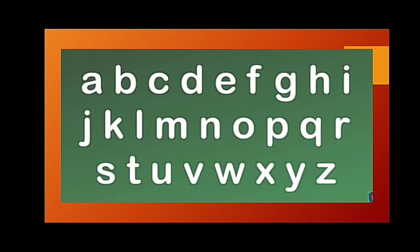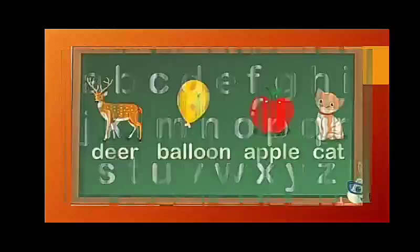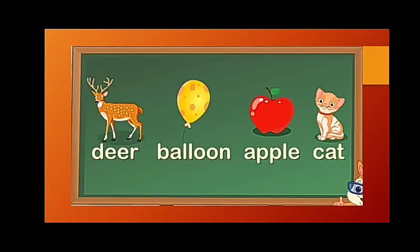This is the alphabetical order of English letters. Let us see a few examples of how the words and letters are arranged in alphabetical order. Words are arranged in alphabetical order according to the first letter. For example, these are the words: